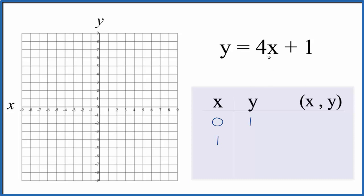Let's put 1 for x. 4 times 1 is 4, plus 1, that gives us 5 for y. And how about negative 1? 4 times negative 1 is negative 4, plus 1 equals negative 3.